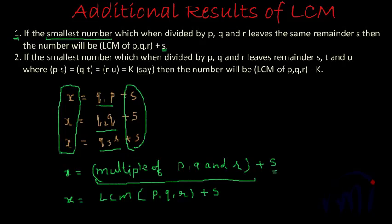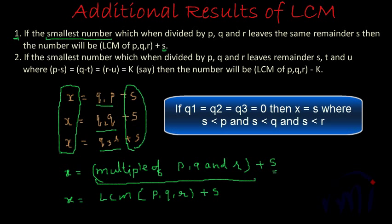This result holds when you assume you are getting a non-zero quotient while dividing X by P, Q and R. If the quotient is zero, then X can simply be equal to S, which is the remainder, where S is less than P, Q and R. So there are actually two cases: if Q1 = Q2 = Q3 = 0, then X equals S; otherwise, if the quotient is non-zero, X equals LCM(P, Q, R) plus S.